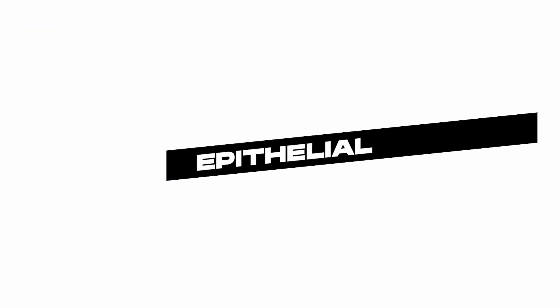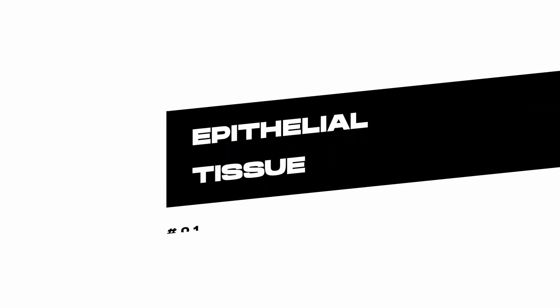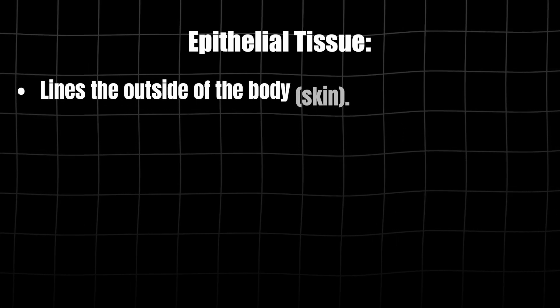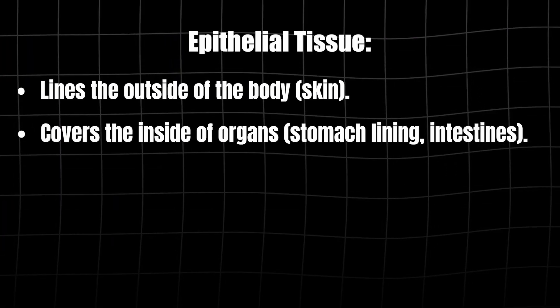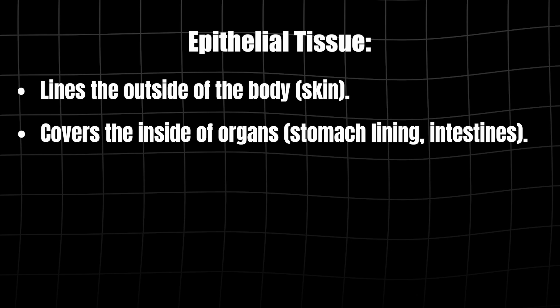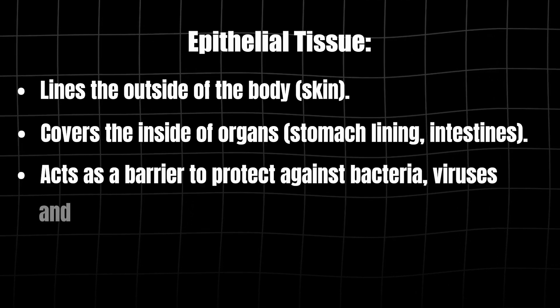Let's go deeper into each one. First up, epithelial tissue. This type of tissue lines the outside of the body, such as your skin, keeping everything contained inside and protecting our vital structures. It also covers the inside of organs, such as your stomach lining and intestines. It acts as a barrier to protect against bacteria, viruses, and dehydration.